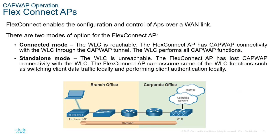FlexConnect APs enable configuration and control of APs over a WAN link. There are two modes: connected mode, where the WLC is reachable and the AP uses CAPWAP to form the tunnel normally; and standalone mode, where the WLC is not reachable and the FlexConnect AP assumes some WLC functions, such as switching client data traffic locally and performing local authentication based on data stored on the AP.